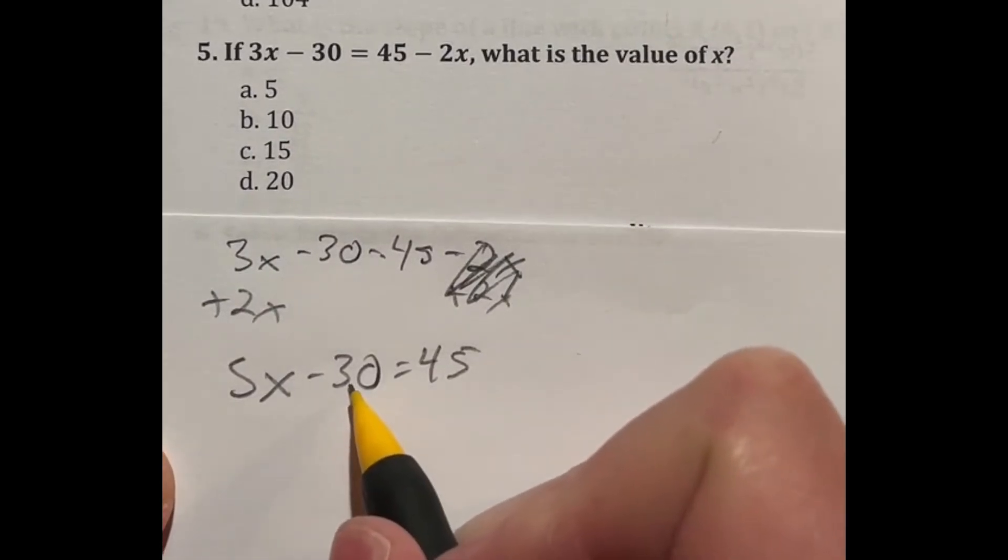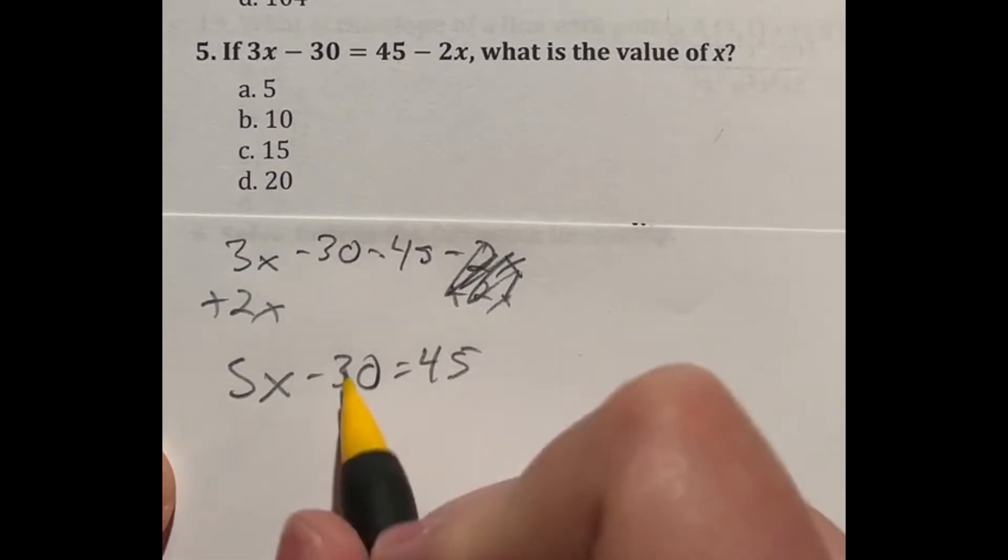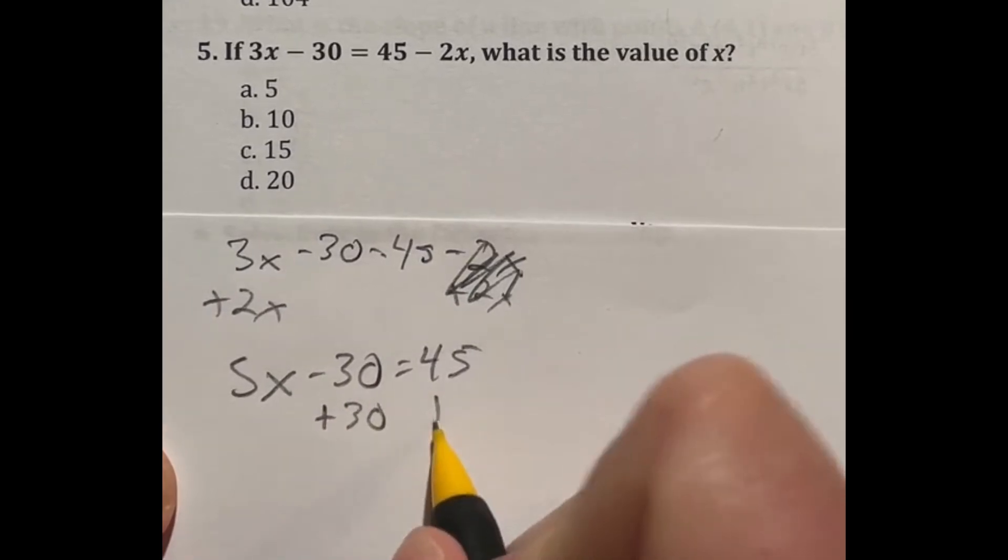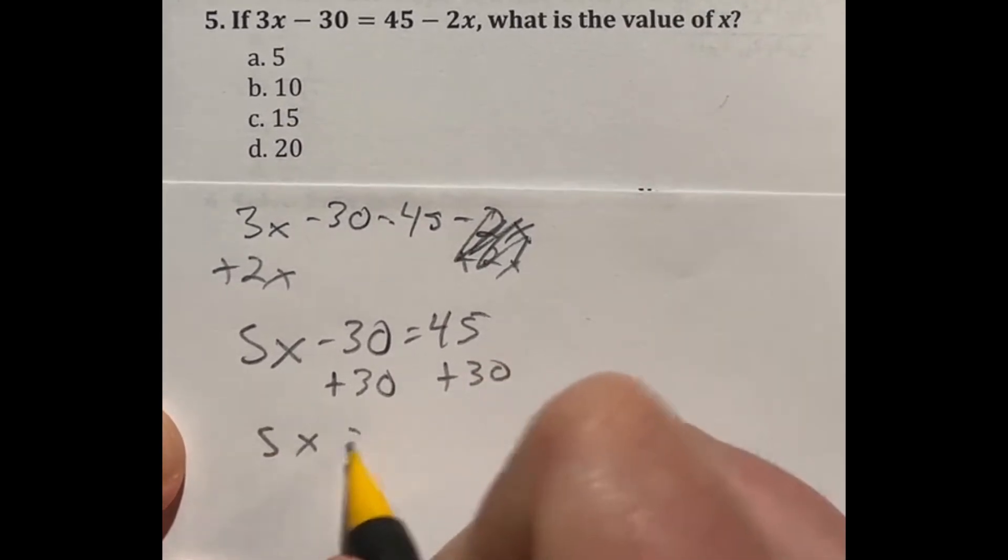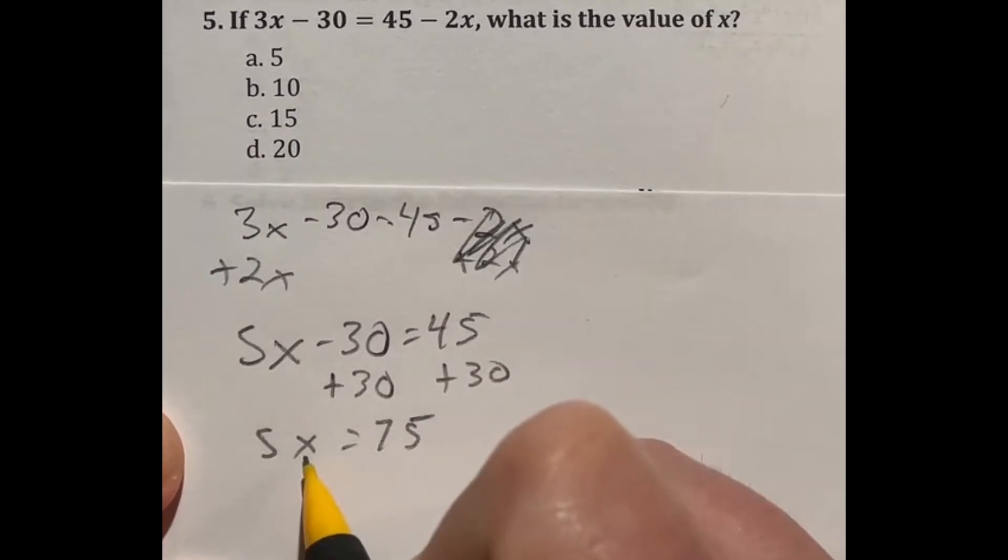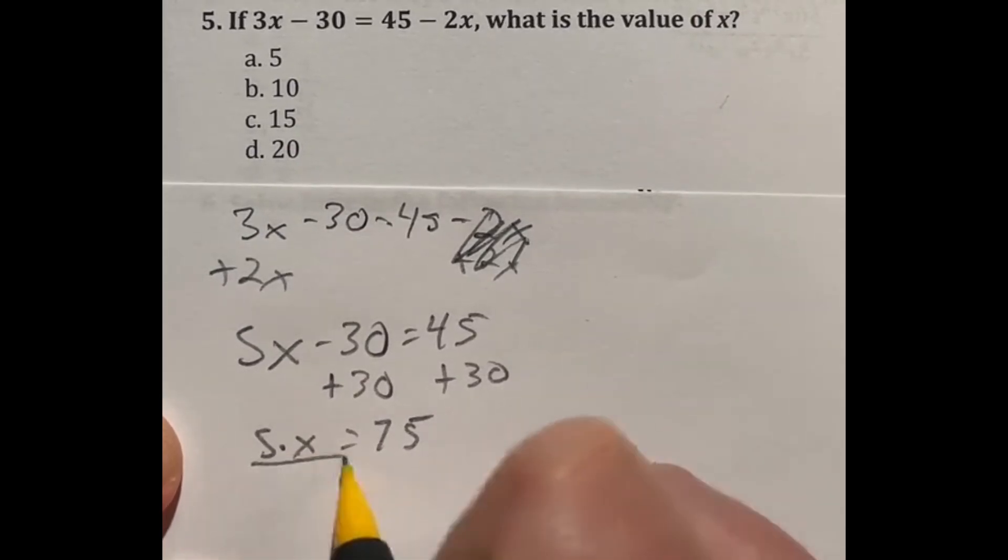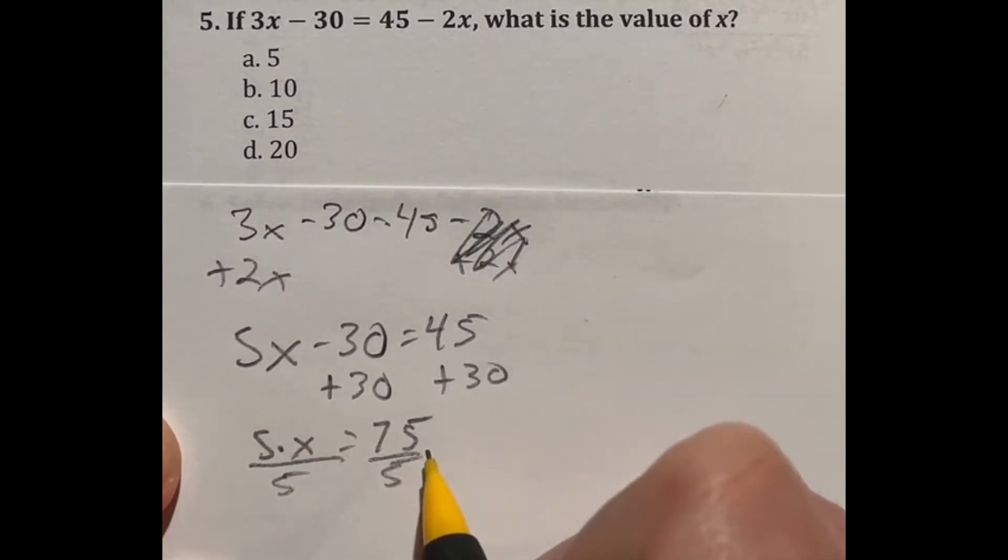Then from there, we're going to move this 30 to the other side to get the x term by itself. So we're adding 30 to both sides. That's going to give me 5x is equal to 75. Then we are multiplying here, although it doesn't say it. So 5 times x. So the opposite of that is division. So I'm going to divide both sides by 5.